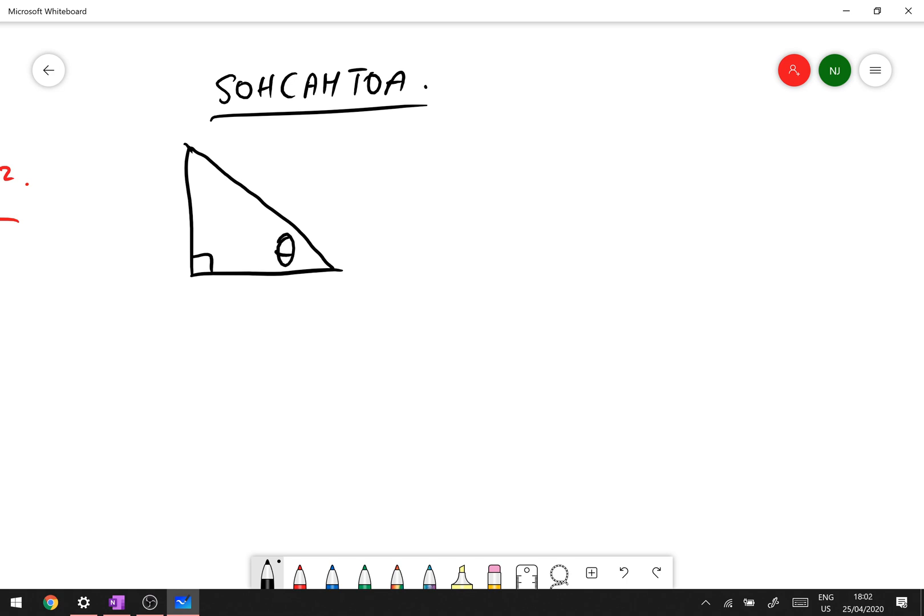So the right angle triangle that we draw like this, here's a right angle triangle. Now from a given angle we know some things about this triangle. The longest side or the side opposite the right angle is called the hypotenuse. The side that is opposite of the angle that we are including or using is called the opposite side, so that's nice and easy.